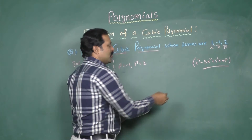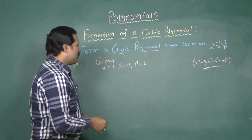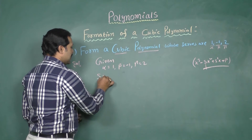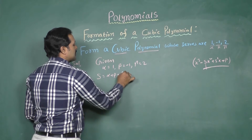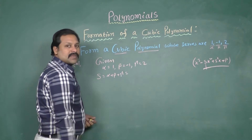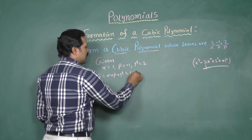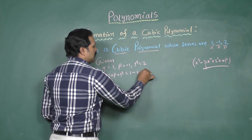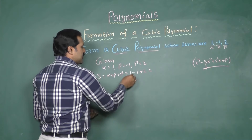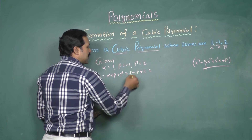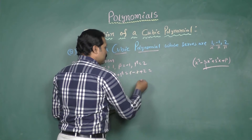S is nothing but the sum of the roots. So S equals alpha plus beta plus gamma. The sum of the roots is 1 plus minus 1 plus 2. So 1 and minus 1 cancel out, and the final result is 2.